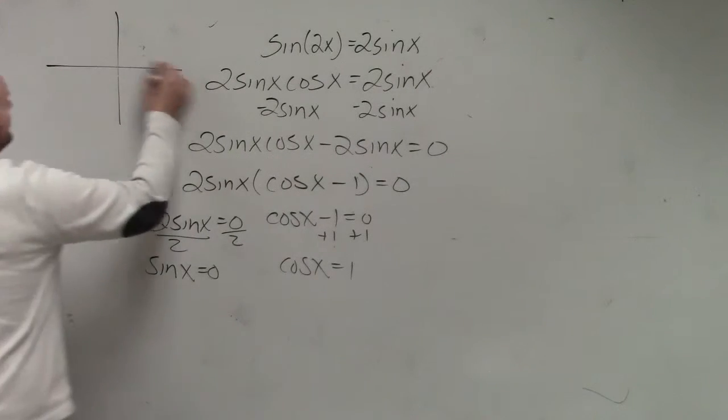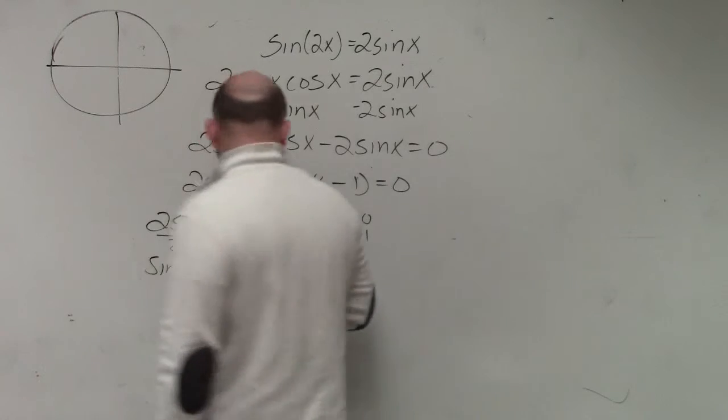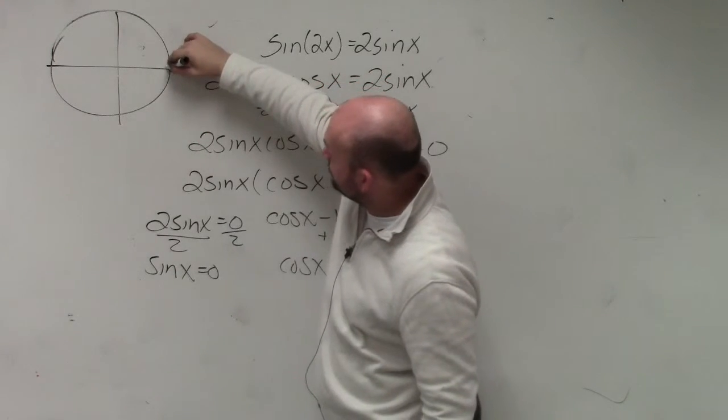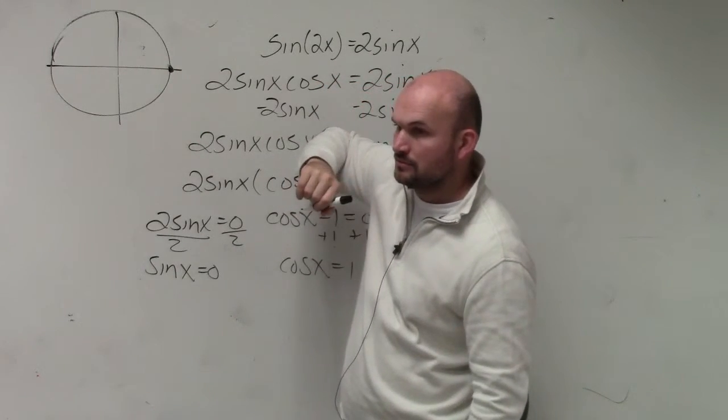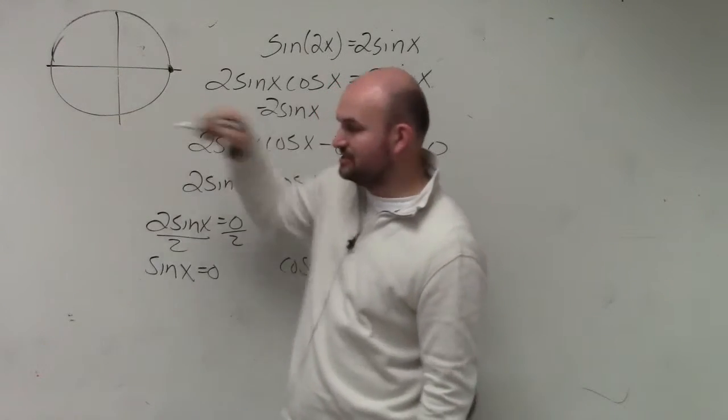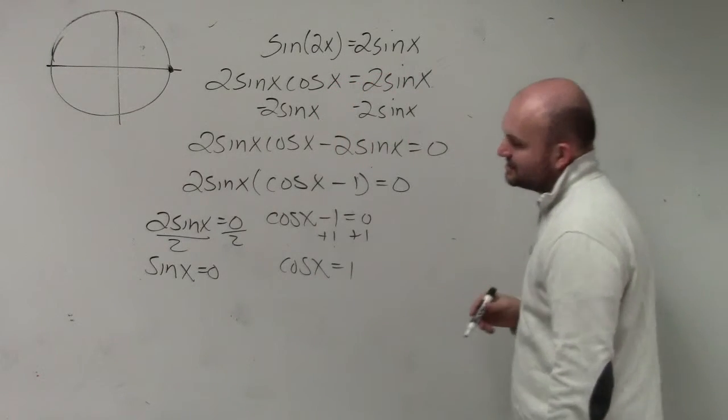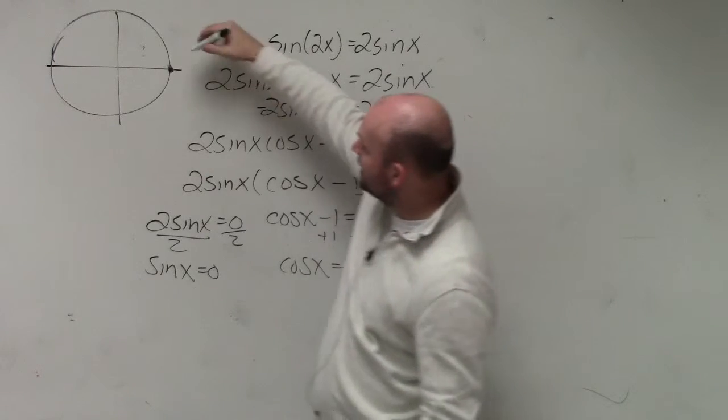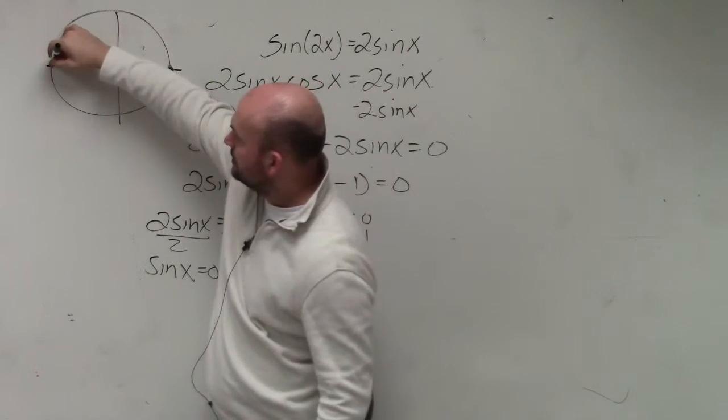Well, if you look at your unit circle, cosine is only going to be equal to 1 here, right? Because over here it's negative 1, and for these two angles it's 0. And when is sin(x) equal to 0? Well, sine is equal to 0 here and here.